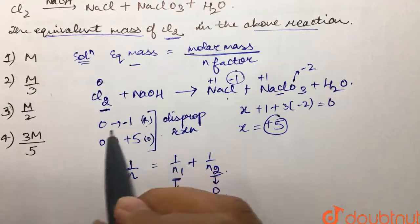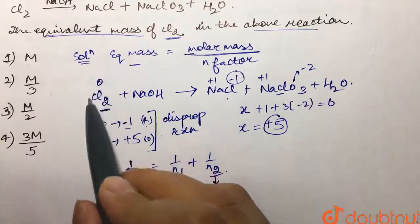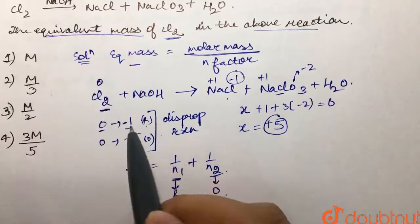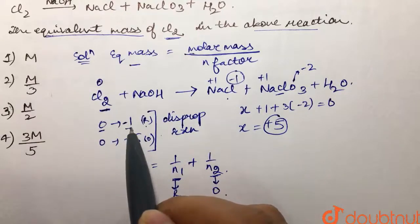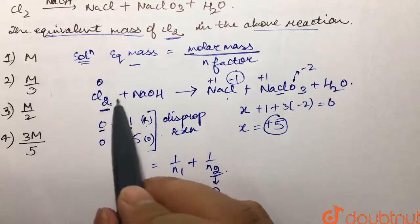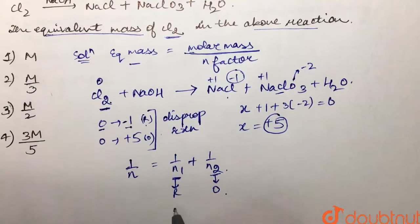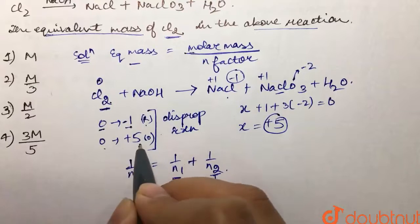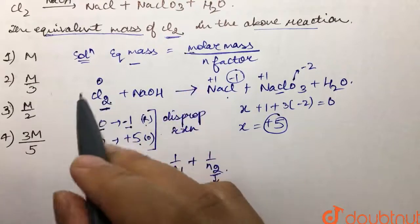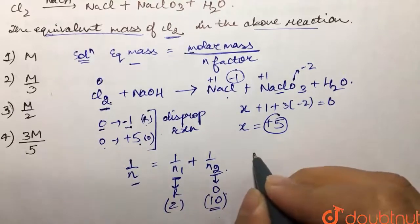For reduction, chlorine goes from 0 to -1. We have 2 chlorines, so there is a total change of 2 electrons, giving n₁ = 2. For oxidation, chlorine goes from 0 to +5, which is a change of 5 electrons per chlorine. With 2 chlorines, n₂ = 10.